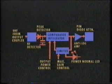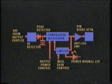The output of the comparator integrator feeds a limiter circuit which, depending on the gain setting of the maximum gain control, limits the transposer gain.